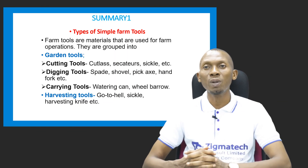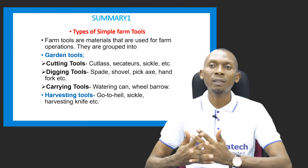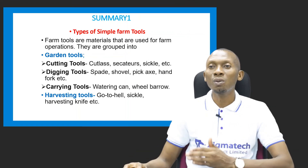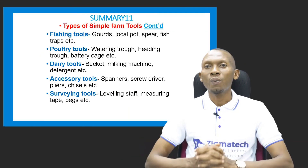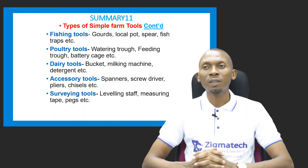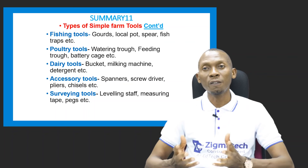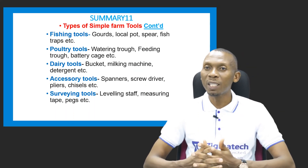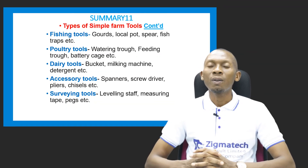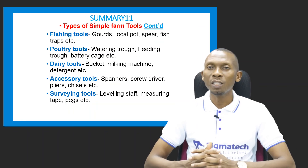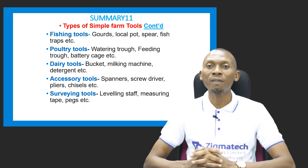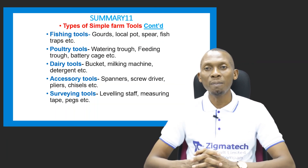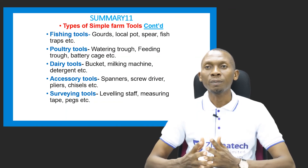To summarize, we have garden tools which include cutting tools like the cutlass, secateur, and sickle, digging tools, and carrying tools. We also have harvesting tools including the go-to-hell, sickle, and harvesting knife. Fishing tools include the guard, local pot, spear, fish traps, and various nets such as the seine net, gill net, and scoop net. Poultry tools include the watering trough, feeding trough, battery cage, fold, and hypodermic. Dairy tools include the bucket, milking machine, and detergent. Accessory tools include the spanners, screwdrivers, pliers, chisel, hammer, and mallet. Surveying tools include the leveling staff, measuring tape, pegs, and ranging poles.